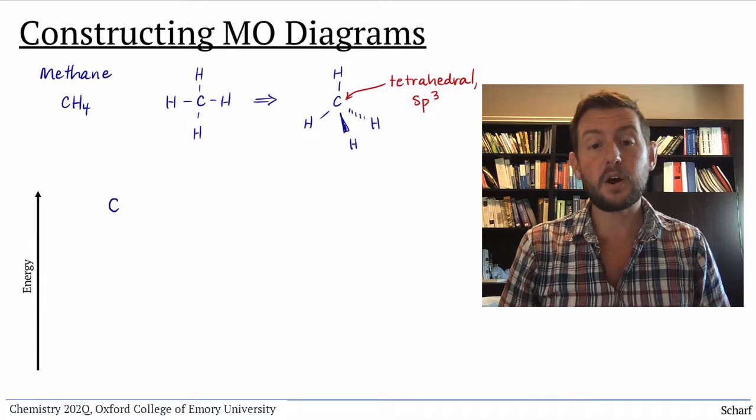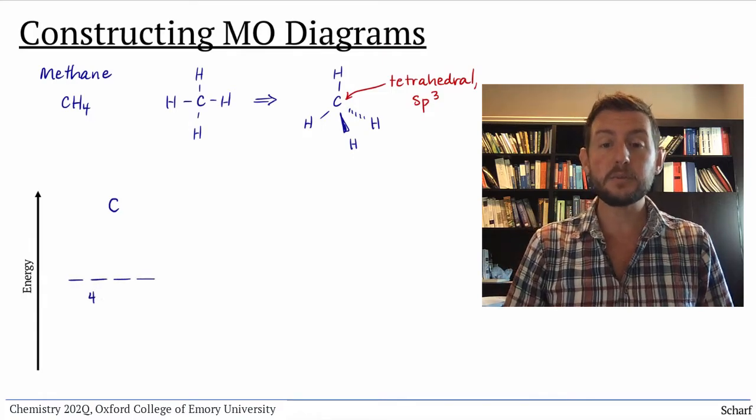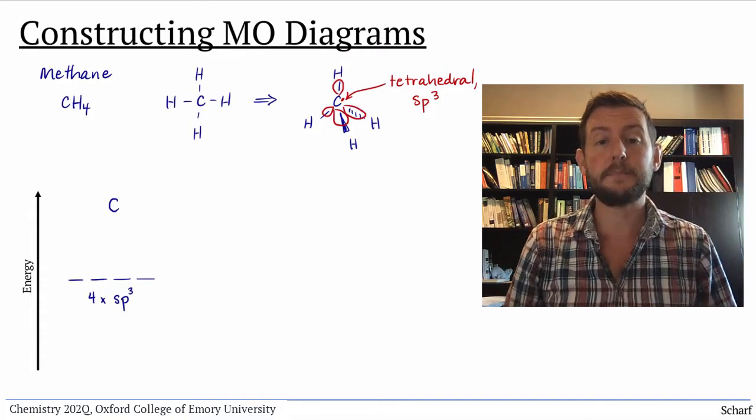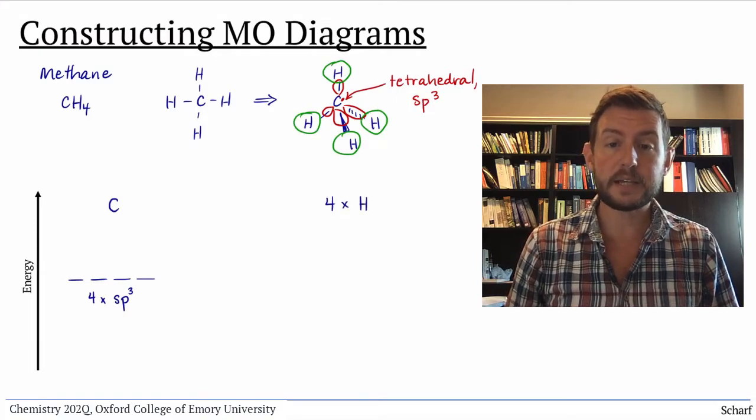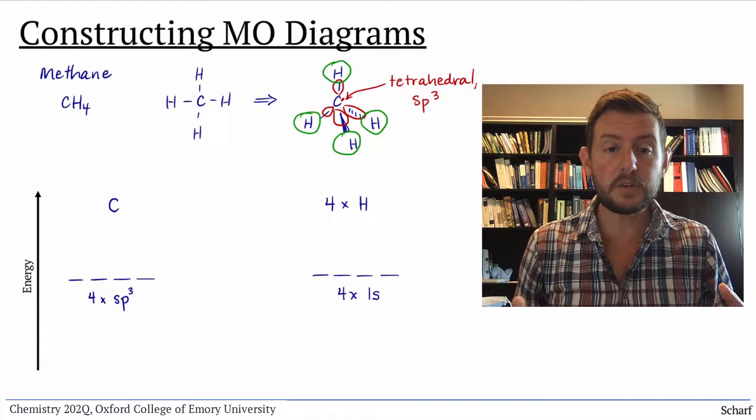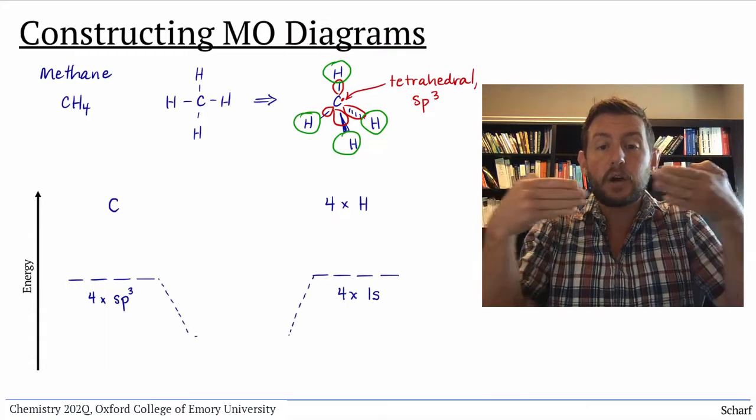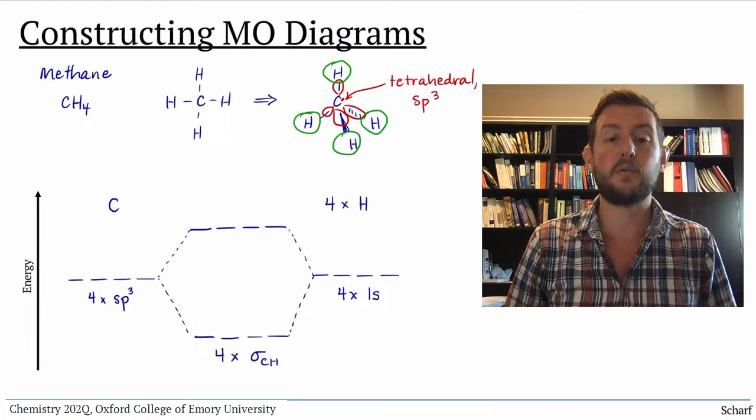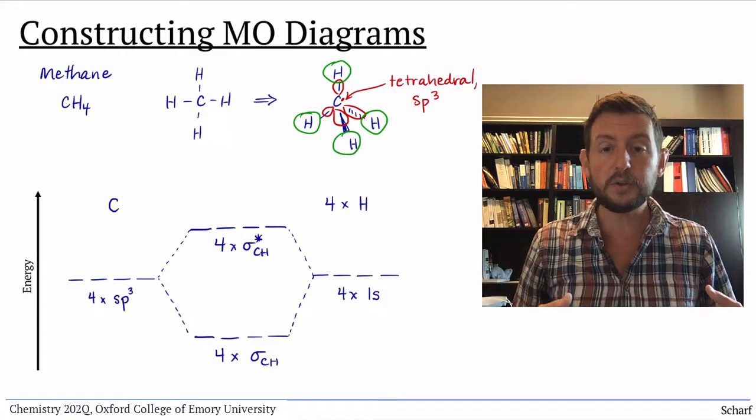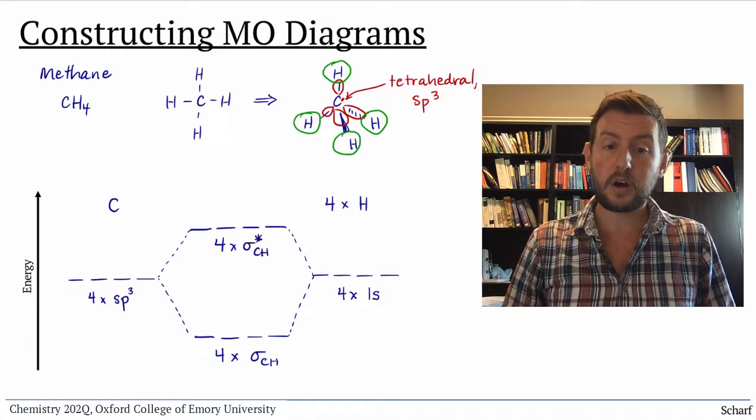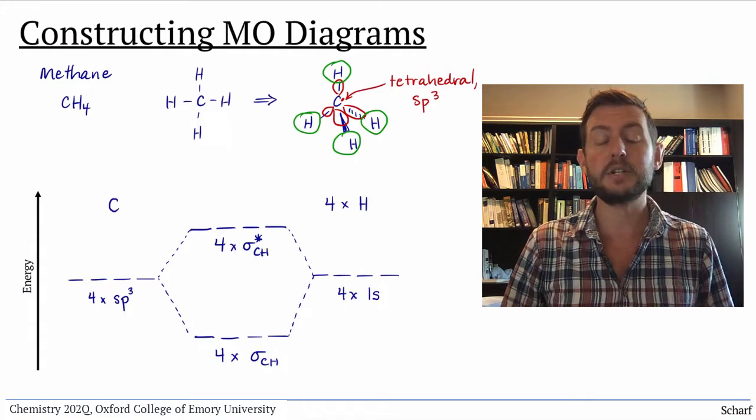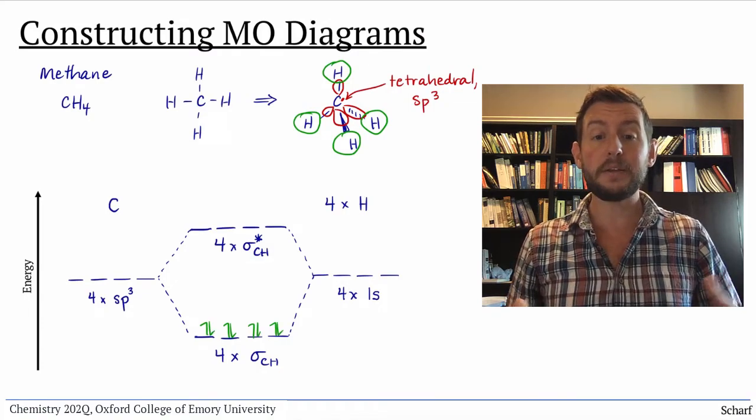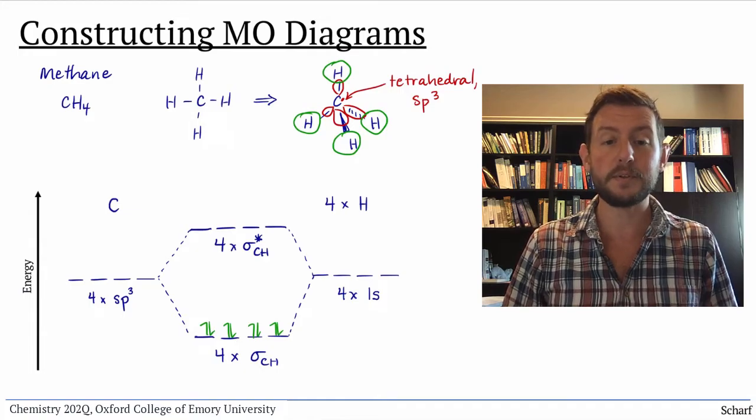This hybridization means that the carbon atom brings four sp3 hybrid orbitals along with it, each pointed toward a hydrogen atom. Each of the hydrogen atoms has a 1s orbital. So, each of the carbon sp3 orbitals interacts with a hydrogen 1s orbital to make a sigma bonding orbital and a corresponding antibonding orbital. Finally, we fill the new molecular orbitals with electrons. Since carbon has four valence electrons, and each hydrogen has one, we fill the diagram with eight total electrons. All the bonding orbitals are full, and none of the antibonding orbitals have electrons in them.